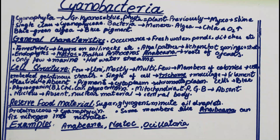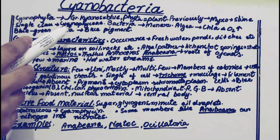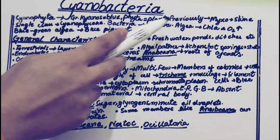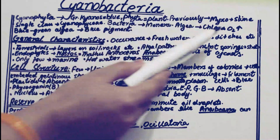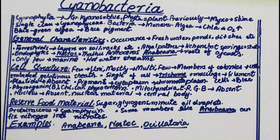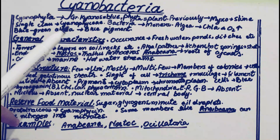First of all, the word cyanophyta comes from the Greek word 'kyanos' which means blue, and 'phyta' as you know means plant. So their name reflects the blue-green color. Previously they were named Myxophyta — 'myxo' means slime — because their surface is a little bit slimy. But now they are known as Cyanophyta.